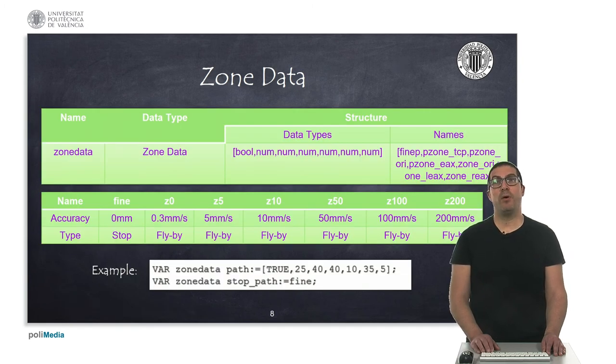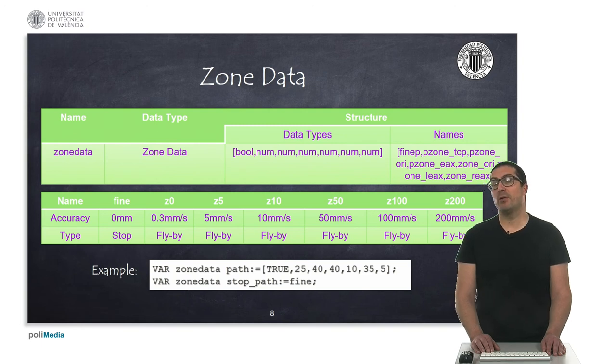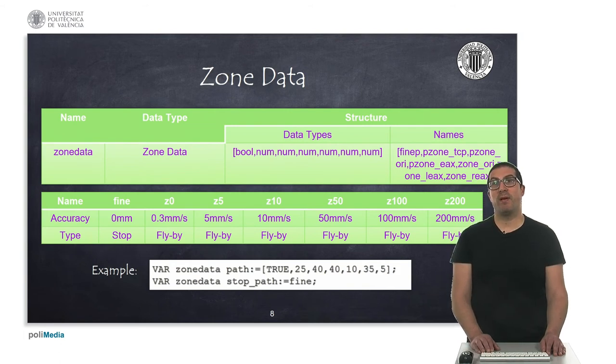Therefore, to define the accuracy of points in a trajectory, we will use the data type zone data that allows us to define if the point is a stopping point or a flyby point, and also the size of the previous mentioned regions. In that data structure, this contains a boolean variable to define whether it's a stopping point or a flyby point, and also six numerical variables that define the size of the zone. So please refer to the technical reference manual for details. Because the recommended values, or the values recommended to be used, depend on the tool to use and on your application. But anyway, we can use some predefined variables. For instance, the fine variable is used to define a stopping point, while predefined variables Z0, Z5, and Z200 among others will allow you to intuitively define the size of flyby points with different size of zones.